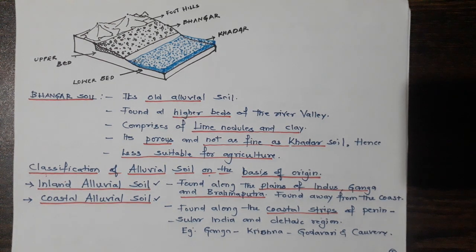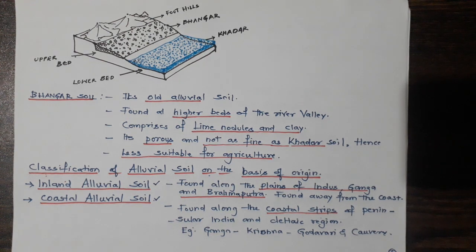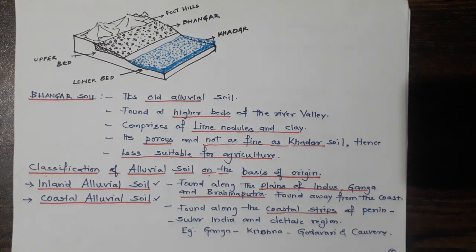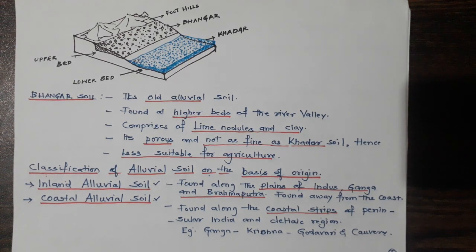Coastal alluvial soil is found along the coastal strips of peninsular India — the western coast and the eastern coast. The western coast is known as the Malabar, Konkan, and Kandra coast, whereas the eastern coast is known as the Coromandel coast and northern Sarkar. The western coastal plains are not very suitable for agriculture as the soil is brackish — meaning saline — because sea water influences the soil, making it less suitable for growing crops.